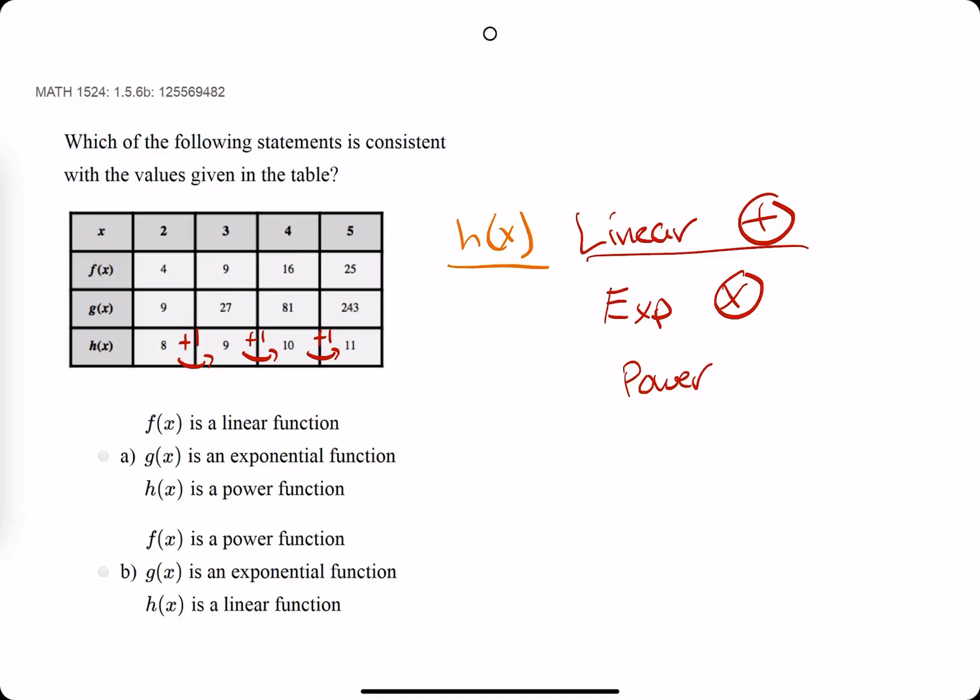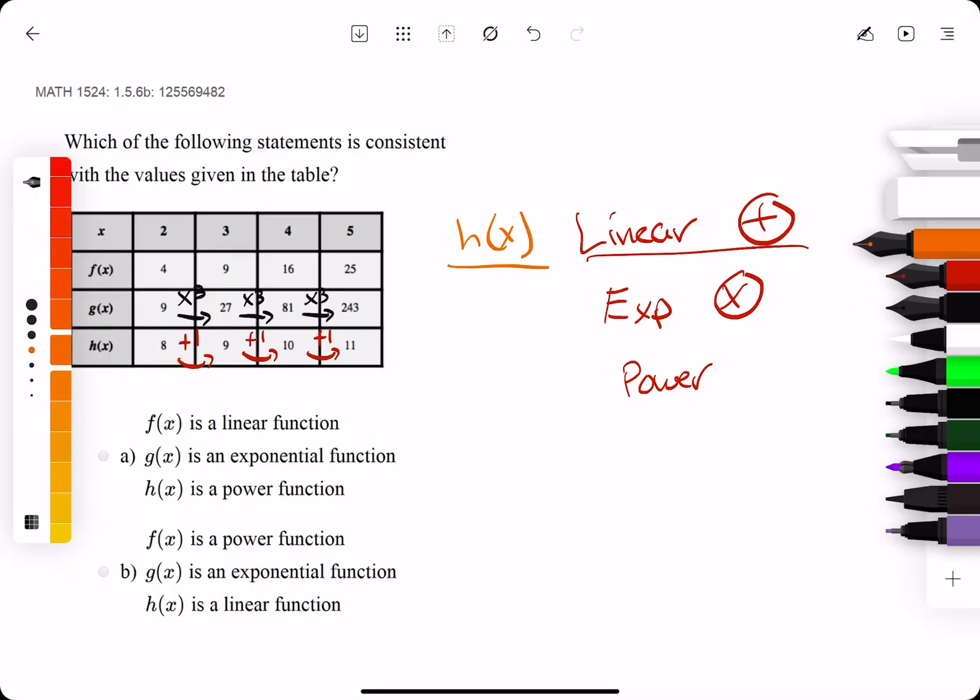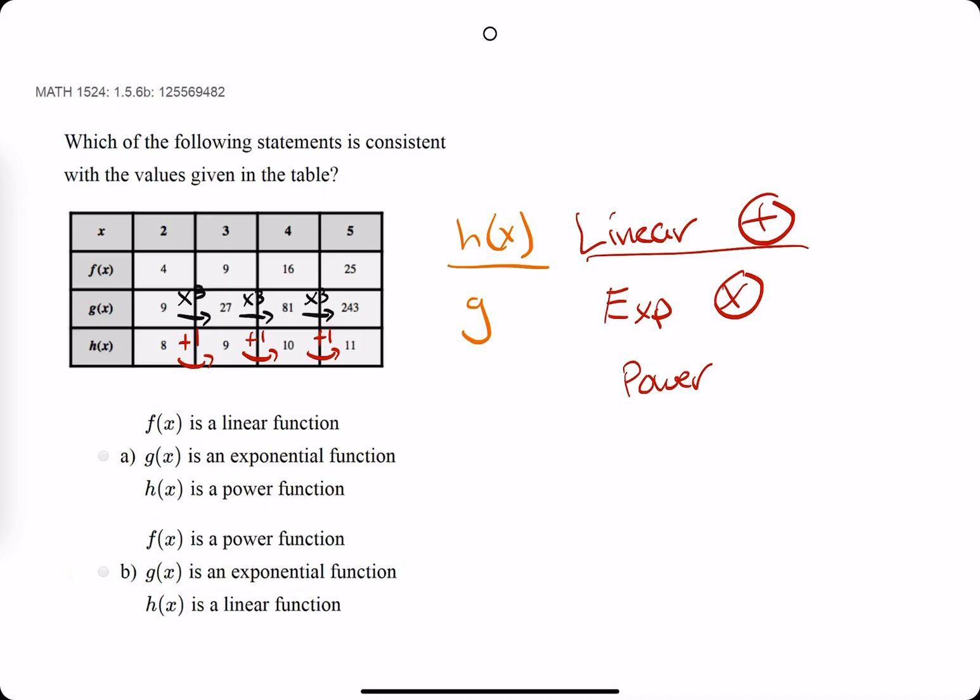Exponential, we're looking for multiplication to be the same in the table. So I see from 9 to 27, we're multiplying by 3. 27 to 81 times 3. 81 to 243 times 3. So that means that g of x is our exponential function. So that leaves f of x to be the power function.